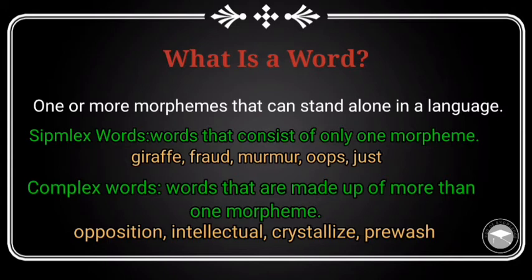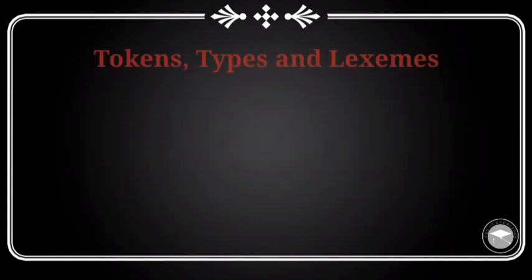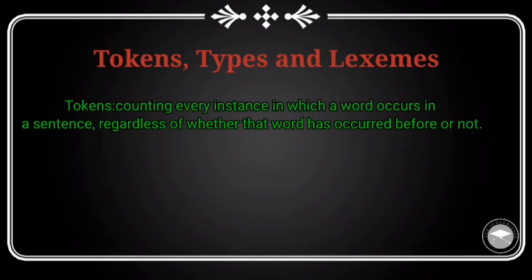With more than one morpheme, one can use a complex word — for example, words like 'crystallize.' Now we move on to see three ways of counting words: tokens, types, and lexemes. If we are counting every instance in which a word occurs in a sentence, regardless of whether that word has occurred before or not, we are counting word tokens.